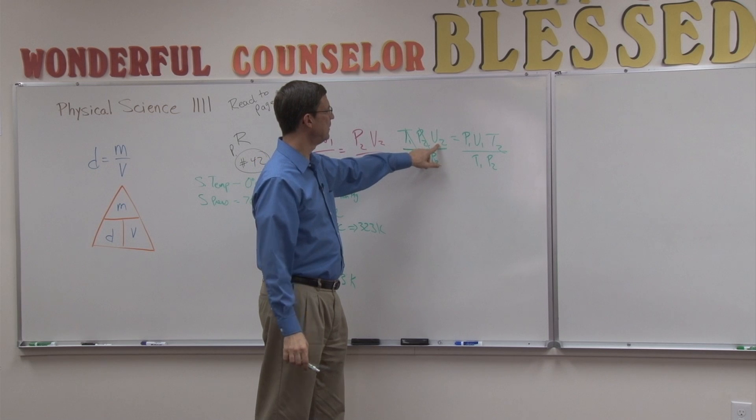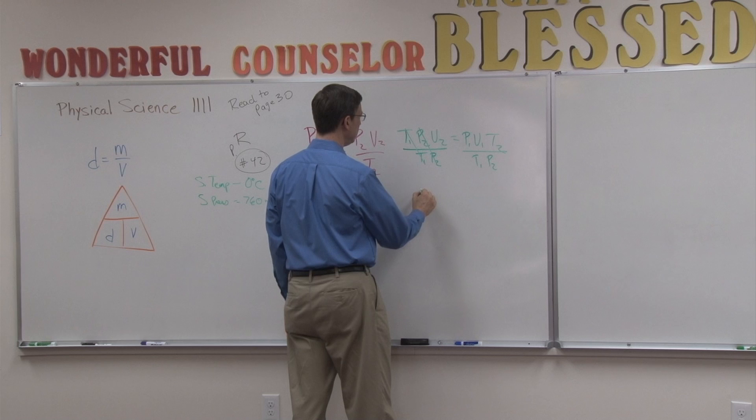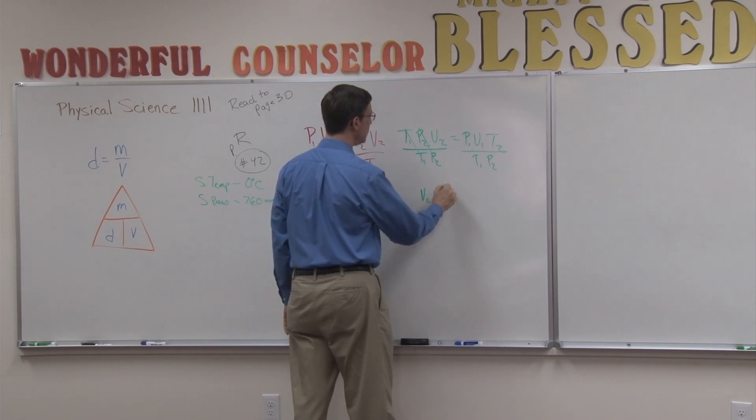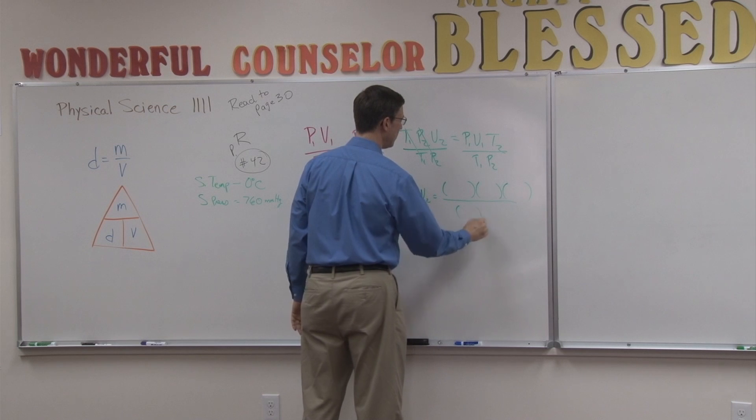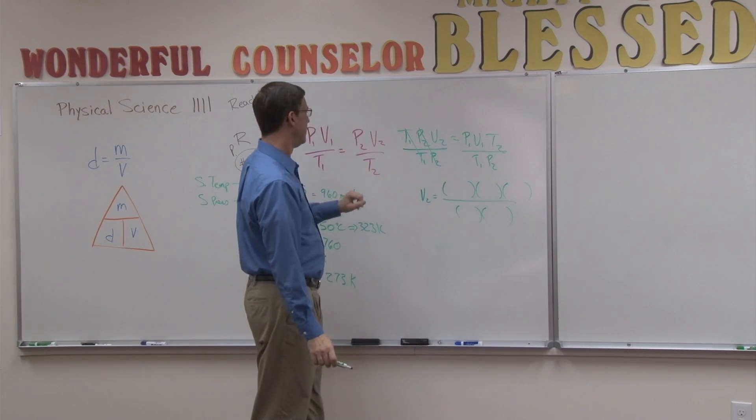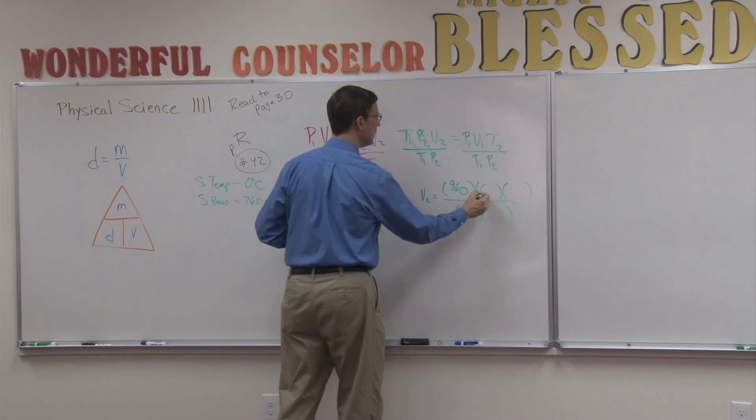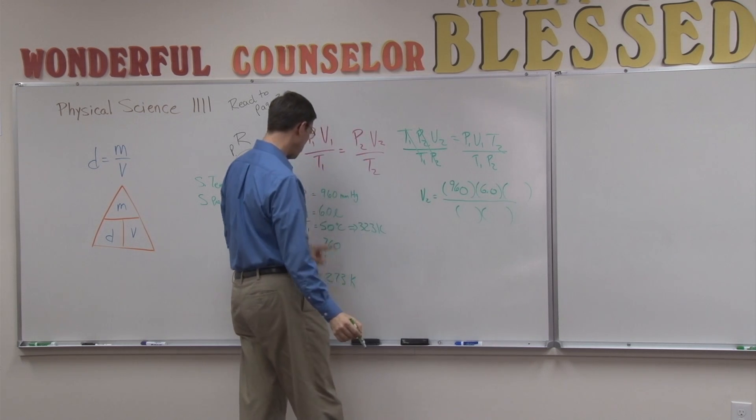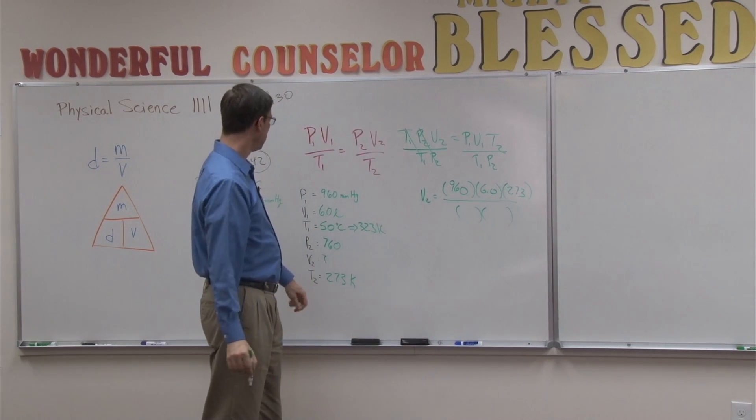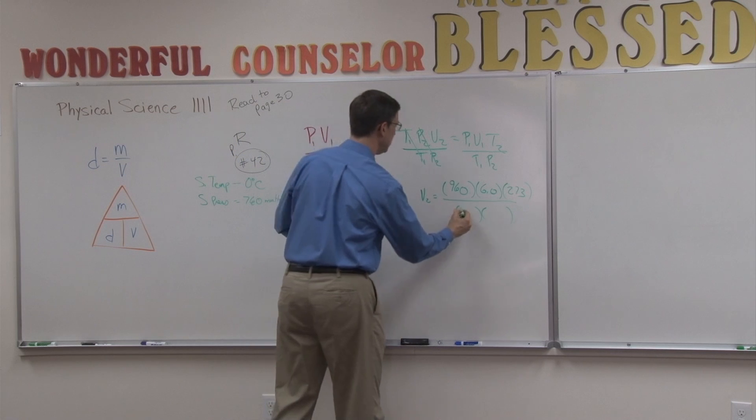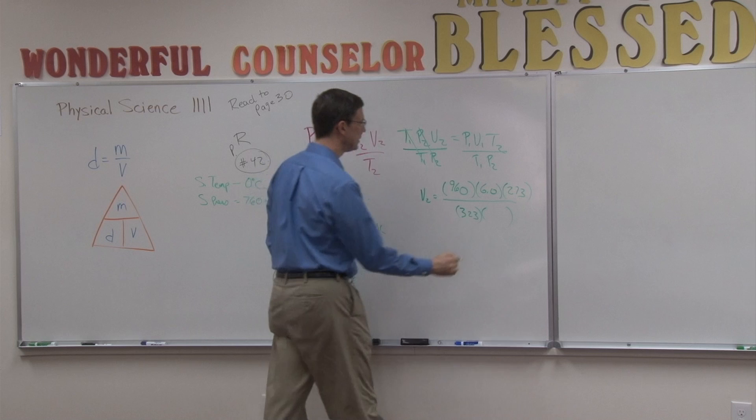So now I have a formula that says V2 equals, and these are the three quantities. So I'm going to set it up with parentheses, and then we're going to plug in the numbers. So P1 is 960, V1 is 6, T2 is the 273, T1 is 323. And P2 is 760.